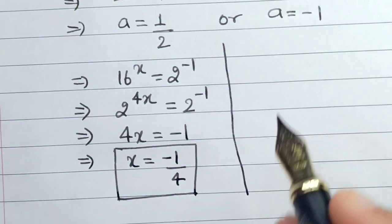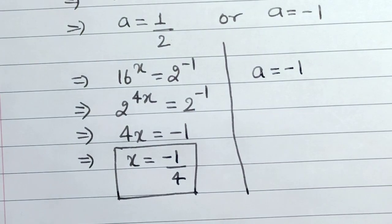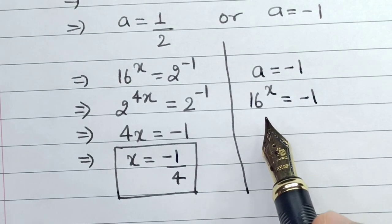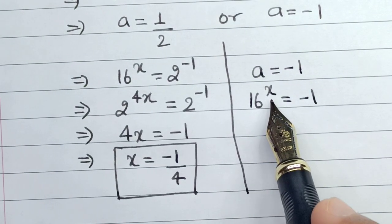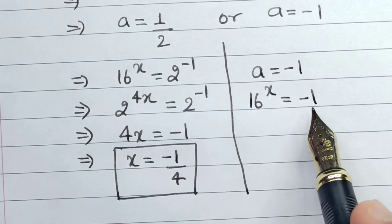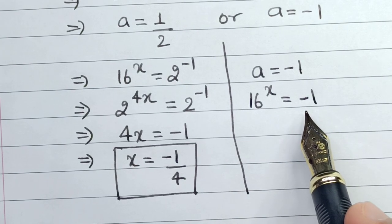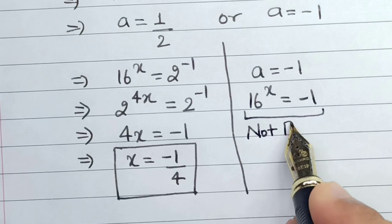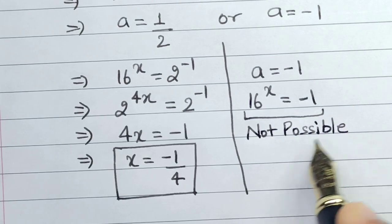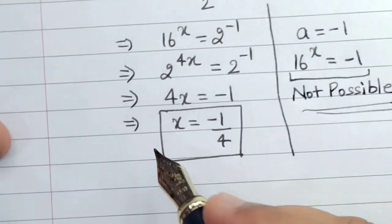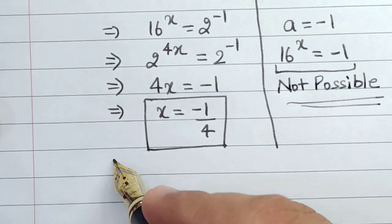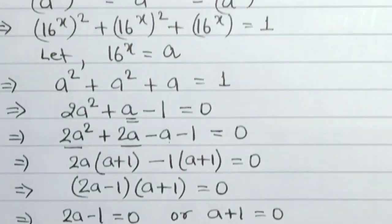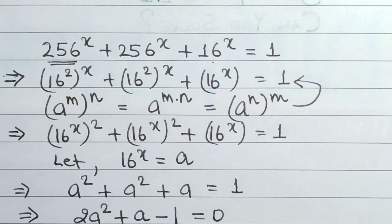For the second case where a equals minus 1, we would need 16 to the power x equals minus 1. Clearly, when we substitute any integer or even a fraction value of x, we will never get a negative answer. So for this part of the equation, the value of x cannot be calculated — hence this case is not possible. Therefore, the final answer to this question is x equals minus 1 by 4. I hope you really liked this video. For more such videos, please subscribe to our YouTube channel.